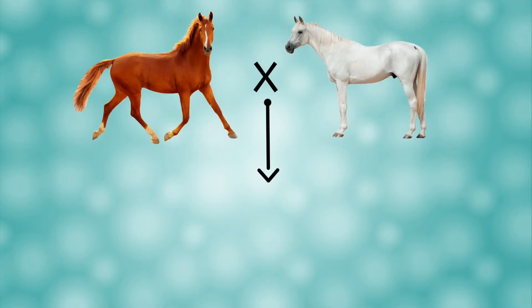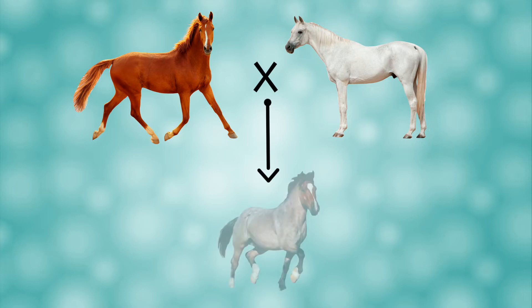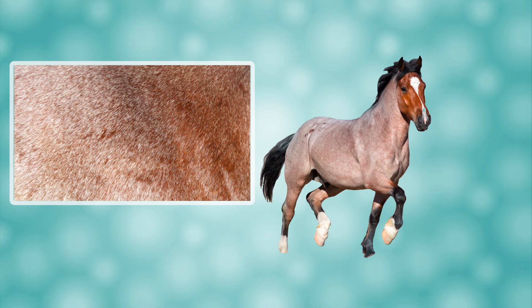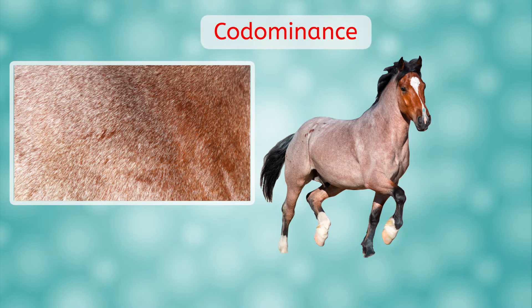For example, look at the offspring of a red horse and a white horse. It has a color known as roan. At first it looks like a color in between red and white, but close inspection shows that the red and white hairs are still there individually. So this is co-dominance as opposed to incomplete dominance. Because they are so similar, you will sometimes hear the terms used interchangeably.